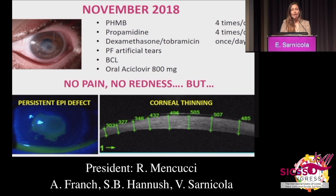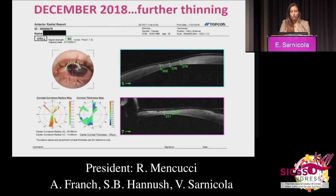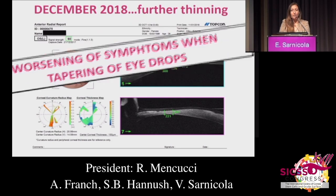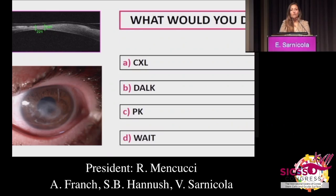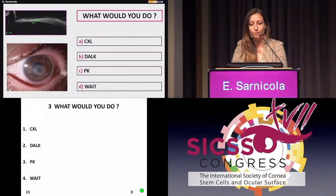Neurotrophic keratopathy developed and the cornea started thinning after one month. On the 23rd of December she came to us with an extremely thin cornea. The treatment was the minimum that allowed us to keep symptoms under control — if even one of these drugs was tapered down, photophobia and redness would come back.